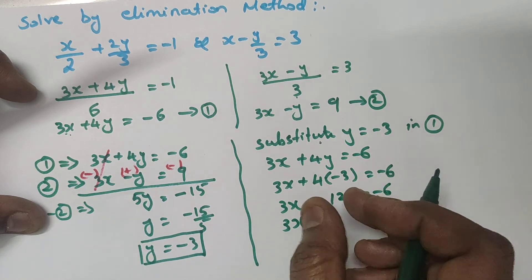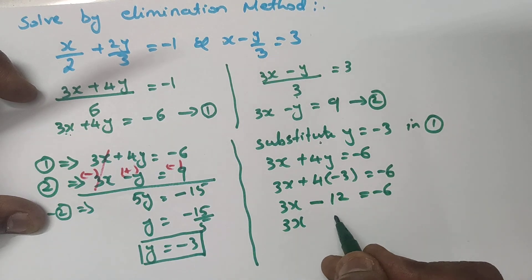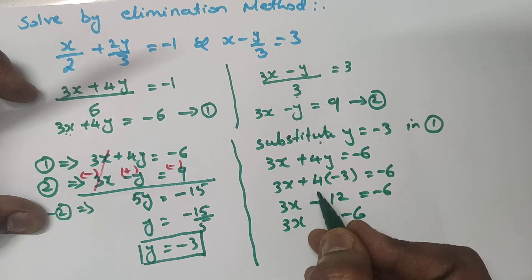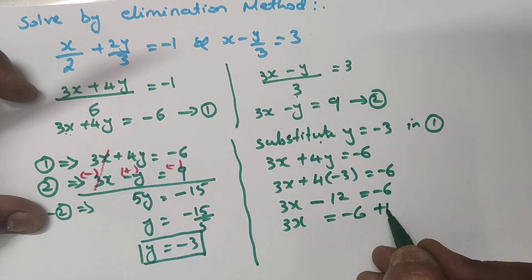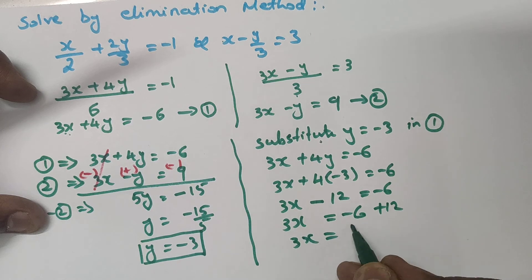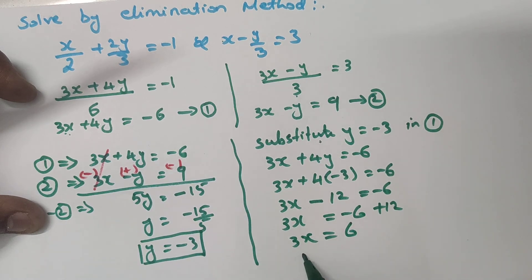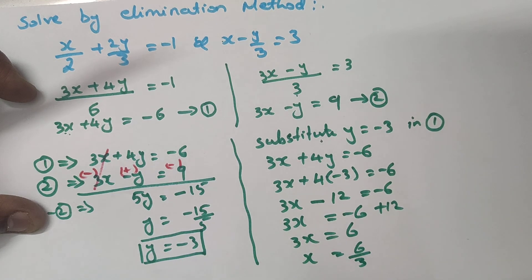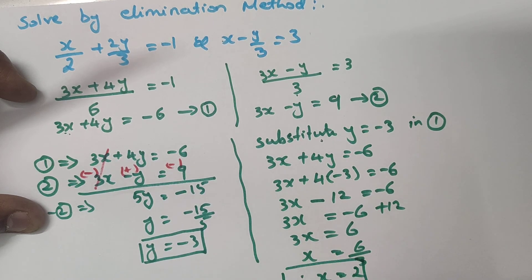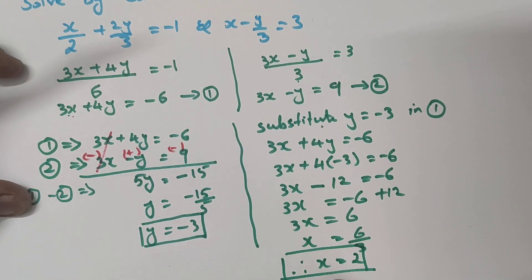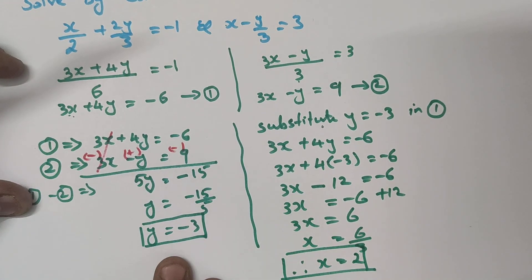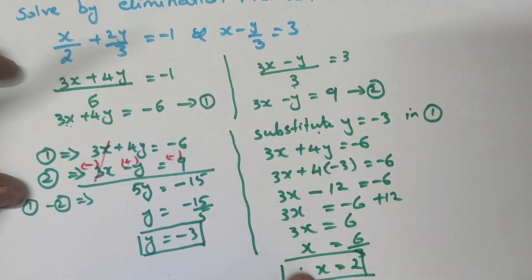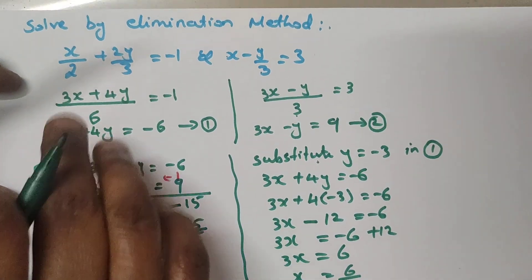To isolate x, bring minus 12 to the other side — it becomes plus 12. So 3x equals minus 6 plus 12, which is 6. Bringing 3 to the other side as division: x equals 6 divided by 3, therefore x equals 2. So the solution is x equals 2 and y equals minus 3. This is the way to solve the equation by the elimination method.